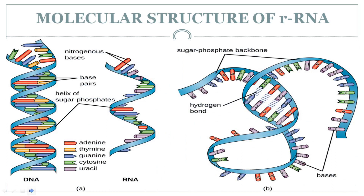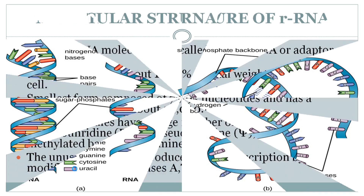Here is the structure of ribosomal RNA. This is called the sugar-phosphate backbone. In between there are hydrogen bonds and the nitrogenous bases are shown clearly in the structure.